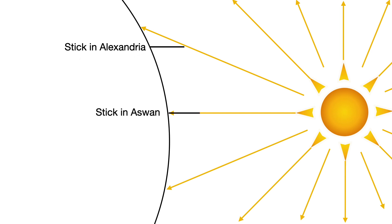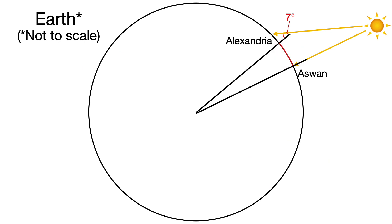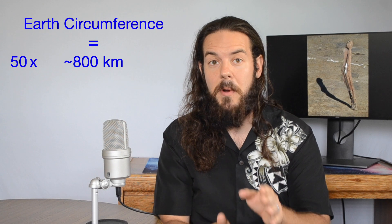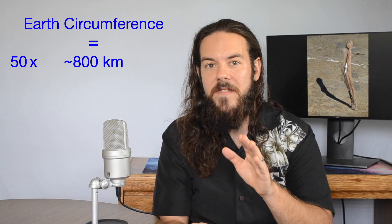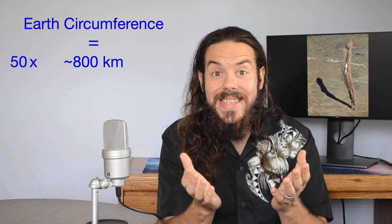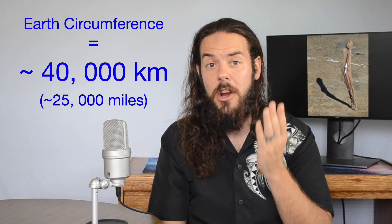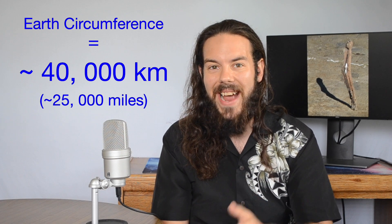Eratosthenes found a value of seven degrees in Alexandria, and a value of zero degrees in Aswan because the sun was directly overhead. So the distance along the curved surface of the earth from Aswan to Alexandria must be seven degrees, or one-fiftieth of an entire 360-degree circle. This means the circumference of the earth is 50 times the distance between Aswan and Alexandria. Since Eratosthenes knew that distance, he just multiplied by 50 and figured out the circumference of the earth. The amazing thing is that the value he calculated is only 1.4% less than the current value we know today to be 39,941 kilometers.